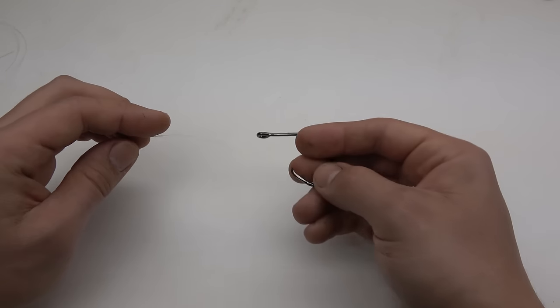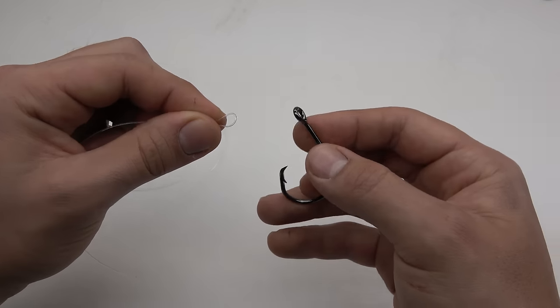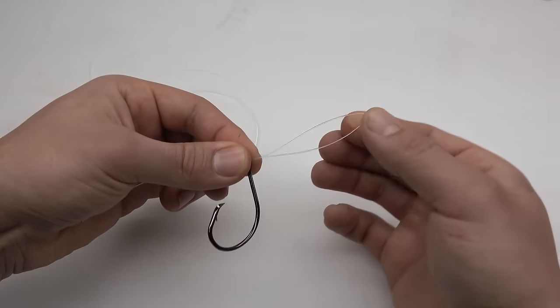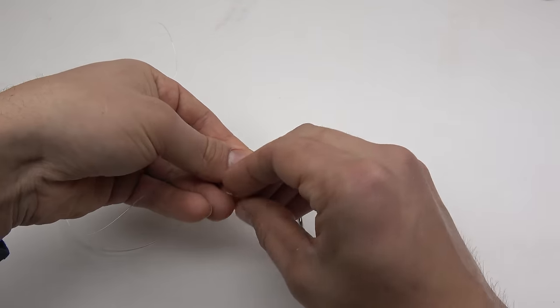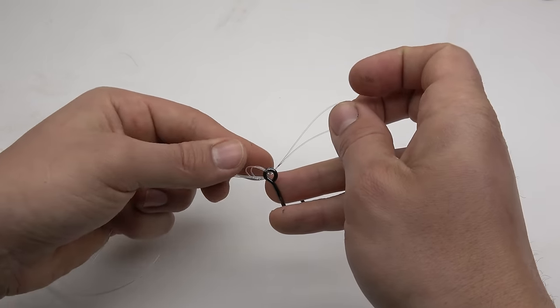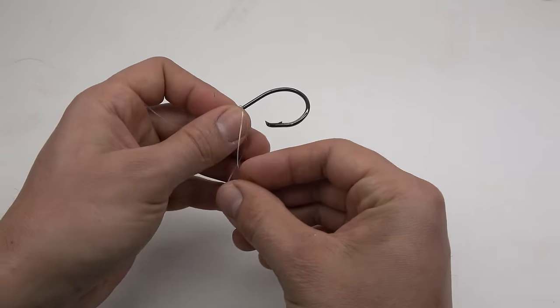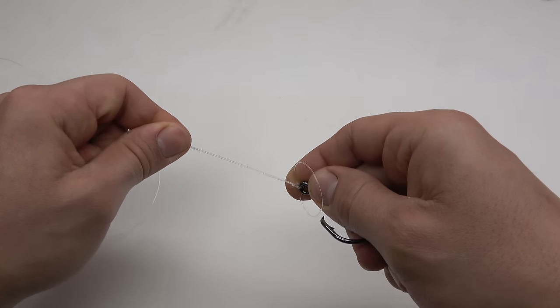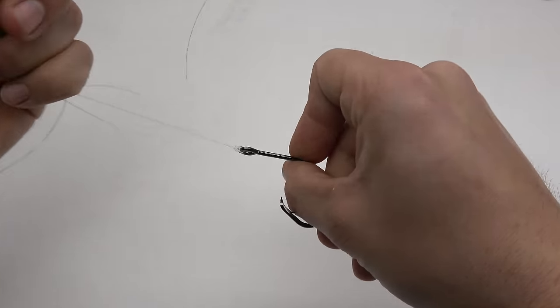To do a palomar knot, fold the end of your line in half, insert into the eye of the hook, tie a simple overhand knot. Pull that loosely because now you need to send the hook back through the loop. Moisten your line normally and then pull tight, and that is a basic palomar knot.